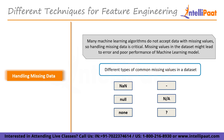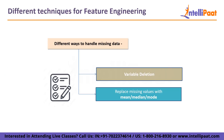Starting with handling missing data. Many machine learning algorithms do not accept data with missing values, so handling missing data is critical. Missing values in the dataset might lead to errors and poor performance of the machine learning model. Missing data can cause a variety of issues: it reduces statistical power, which is the likelihood that the test will reject the null hypothesis if it's true; it can cause bias in parameter estimation; and it has the potential to reduce sample representativeness. Some common ways to handle missing data are by variable deletion and by replacing missing values with mean, median, or mode.